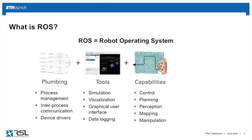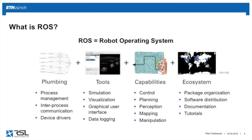There are many capabilities in ROS — control, planning, perception, mapping, etc. Many people contribute to this ecosystem so you can make use of existing tools. If you're an expert in planning, you don't have to write your own mapping algorithms; you can take some off the shelf. Lastly, ROS is a big ecosystem: software is organized in packages, ROS provides an entire software distribution, and there are many tutorials and online documentation.